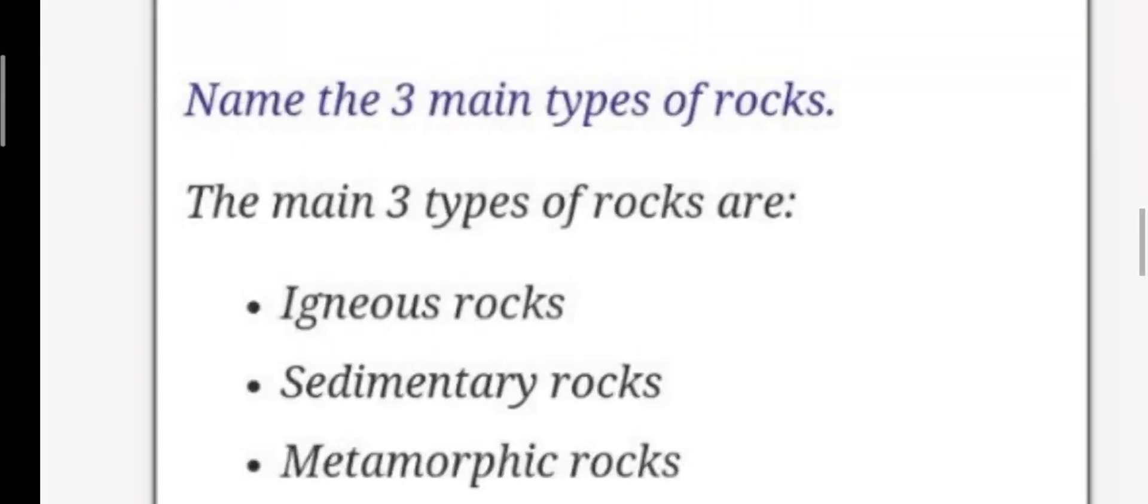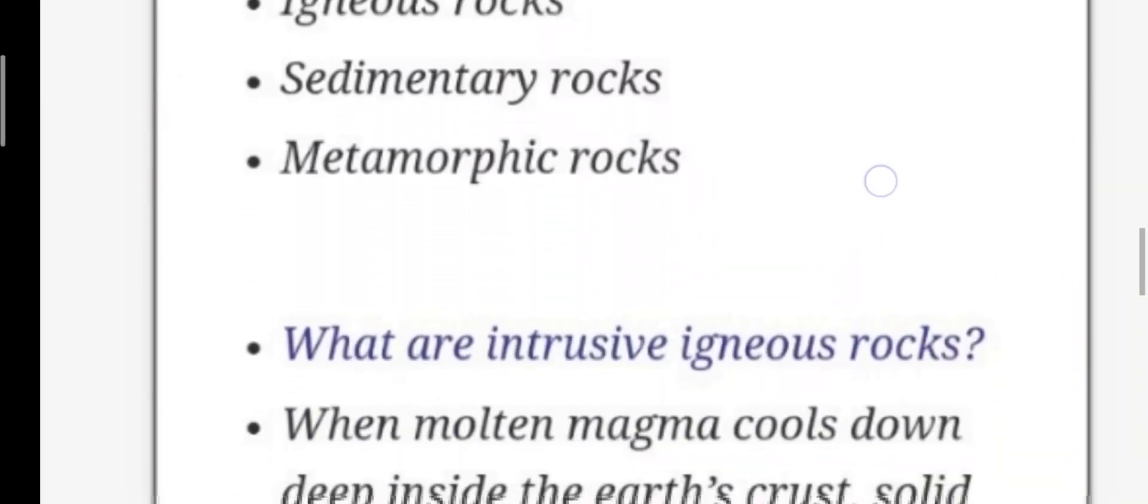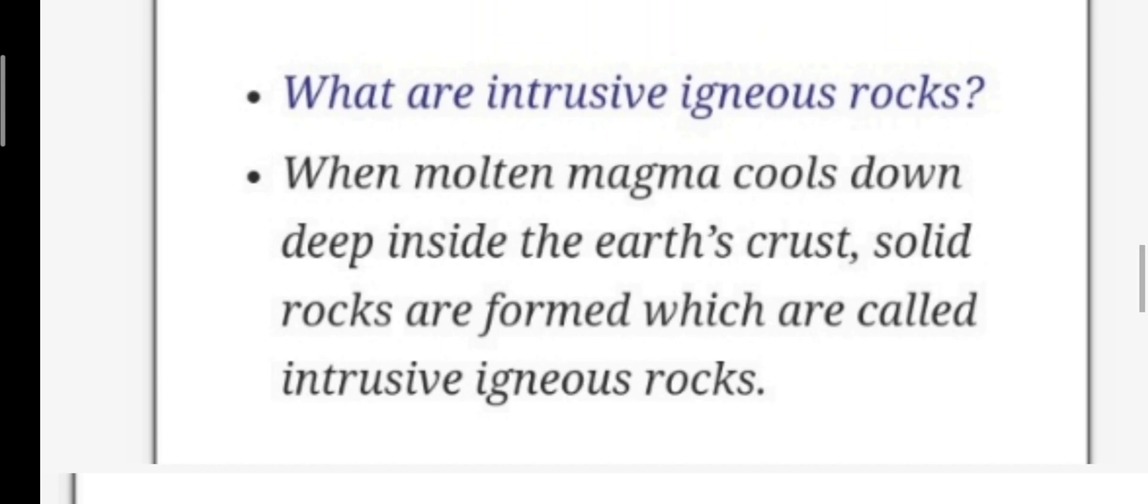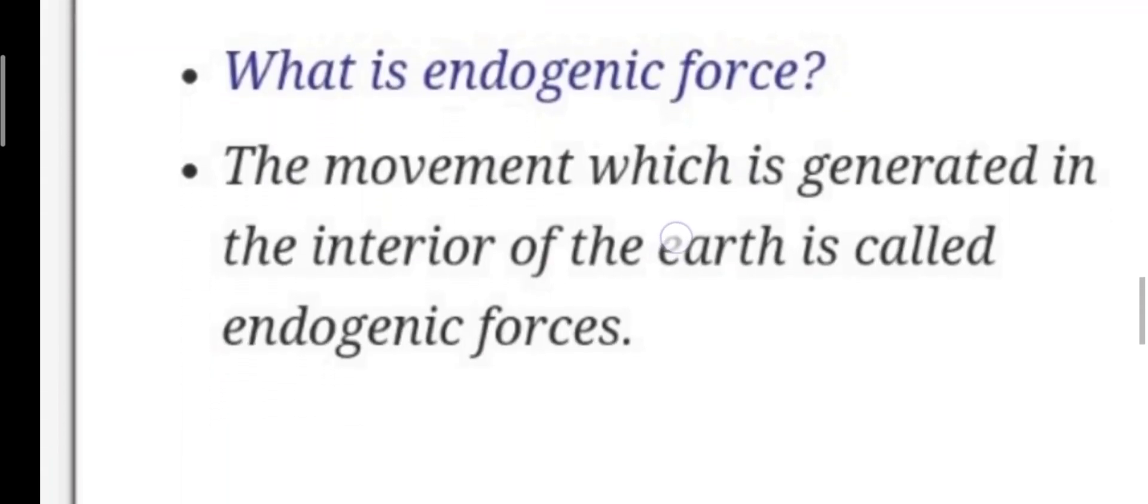Next question: name the three main types of rocks. Then the three types of rocks are igneous rocks, sedimentary rocks, and metamorphic rocks. Next question: what are intrusive igneous rocks? Answer: when molten magma cools down deep inside the earth, solid rocks are formed which are called intrusive igneous rocks.